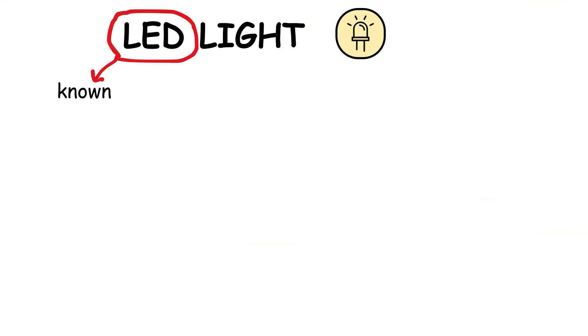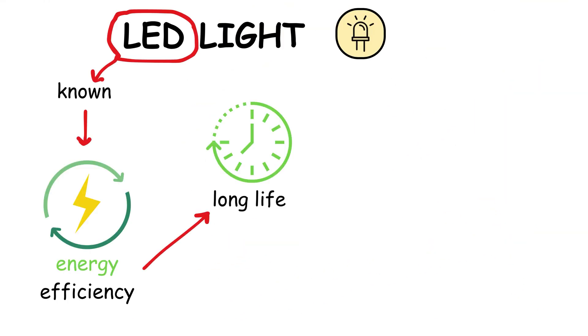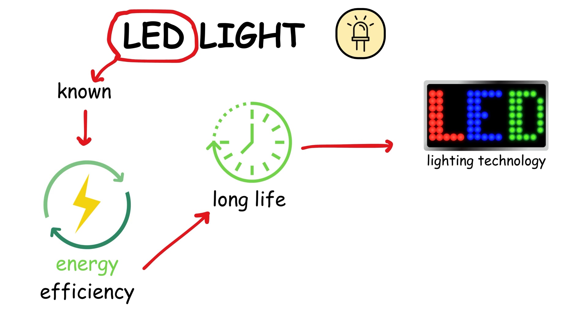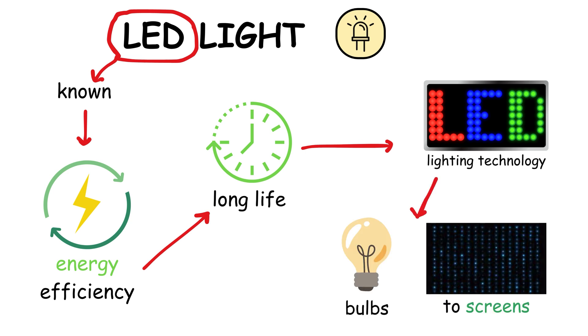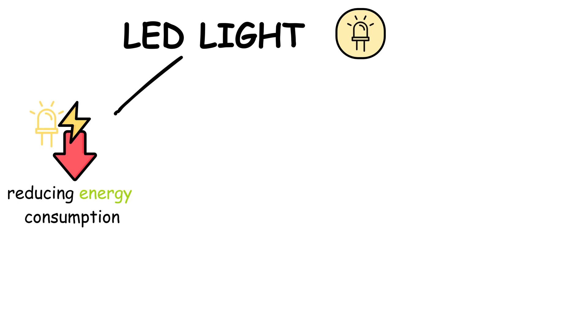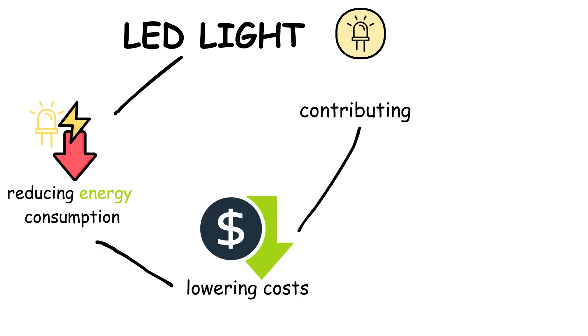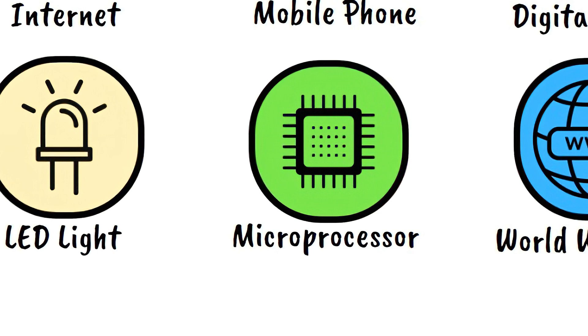LED Light, known for its energy efficiency and long life, has revolutionized lighting technology. It's used in everything from household bulbs to screens, significantly reducing energy consumption, lowering costs, and contributing to a more sustainable environmental footprint.